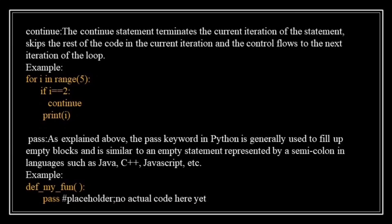The continue statement is also used in loops. When encountered, it stops the current iteration of the loop and proceeds to the next iteration. Unlike break, it does not exit the loop entirely — it just skips the remaining code within the current iteration. Here, the continue statement is used. When i equals 2, the control statement skips the remaining code in the current iteration and proceeds to the next iteration. As a result, the value 2 is not printed.